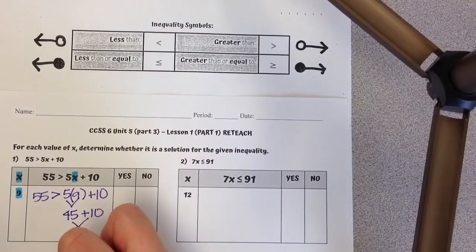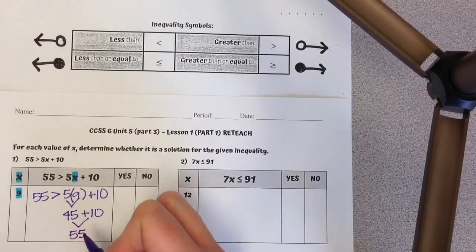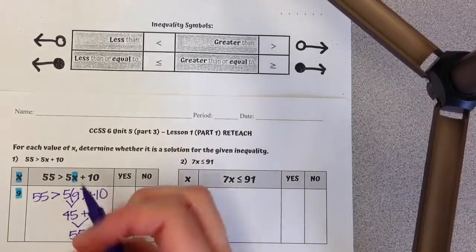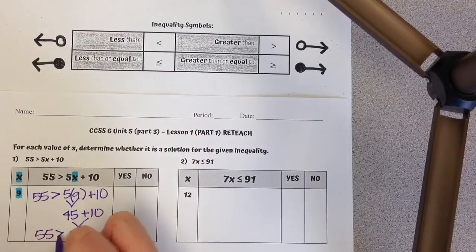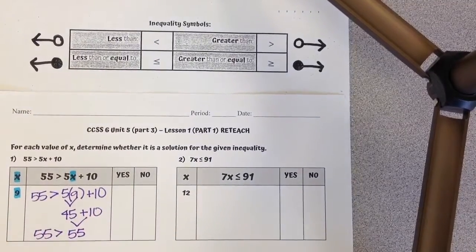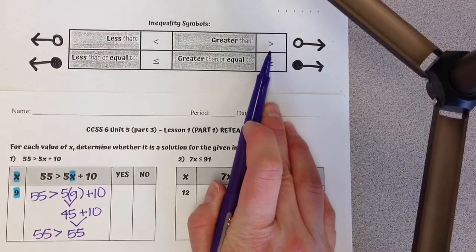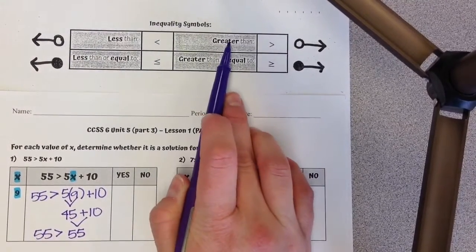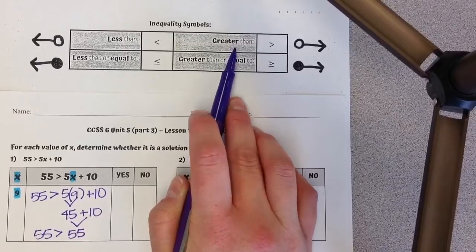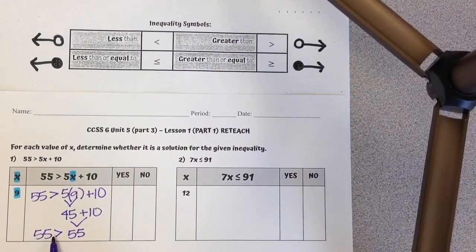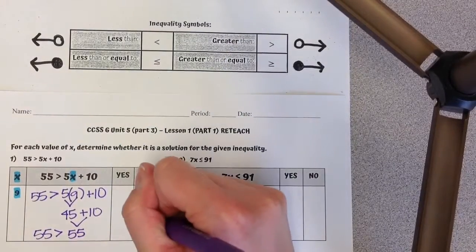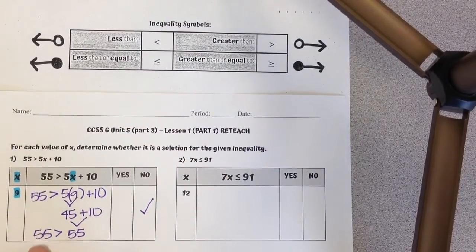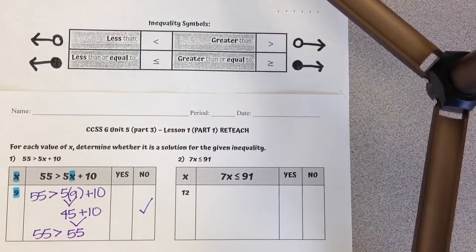45 plus 10 is 55. So this is now saying 55 is greater than 55. If you're confused, make sure you're just looking at your symbols. It's facing this way, I know that means greater than. I'm going to ask myself, is 55 greater than 55? No. They are equal. This one is not greater.